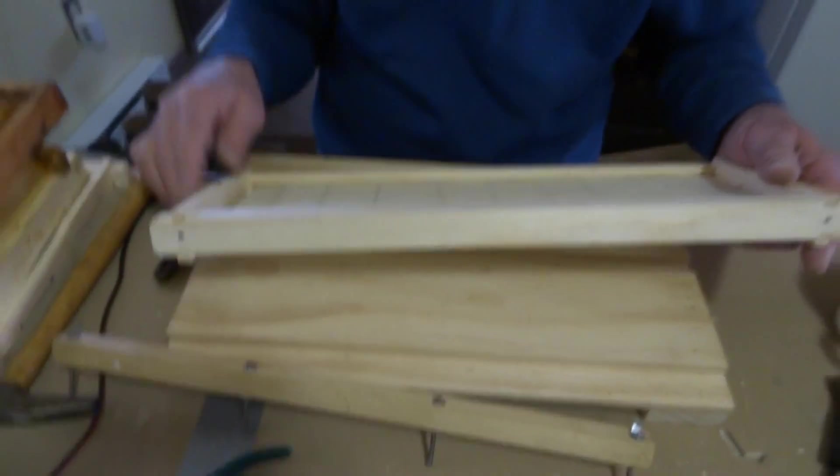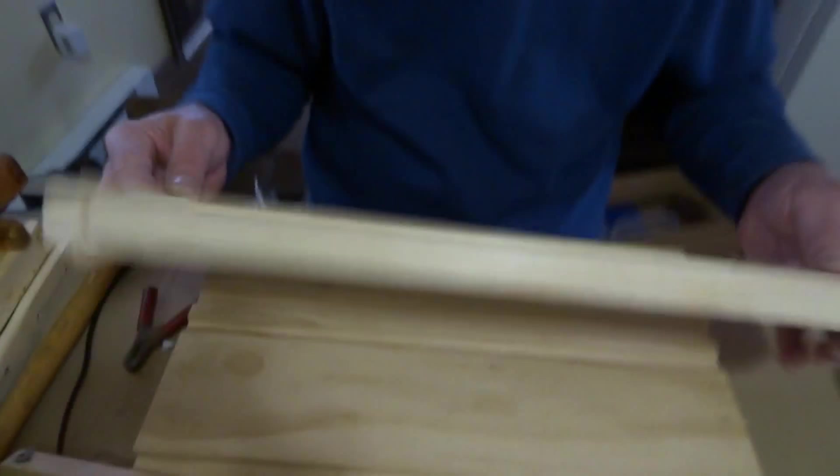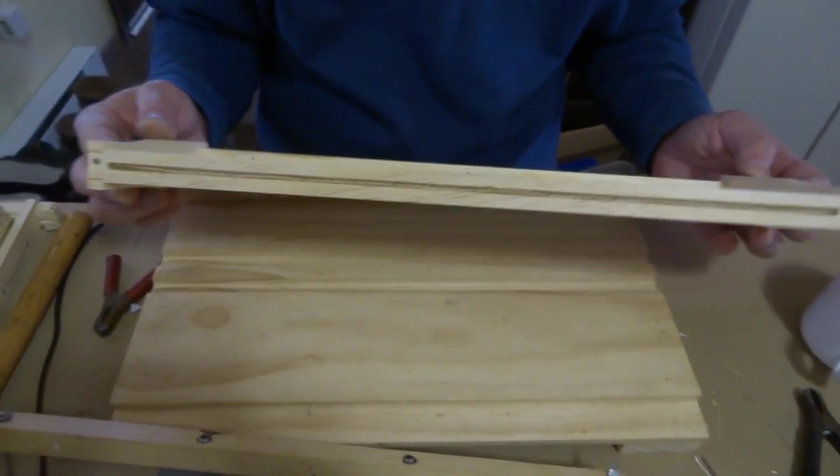You can see along here too where it's embedded on the other side in some cases. It's nice and tight. When the bees build out the wax, this helps prevent blowouts in your honey extractor too.